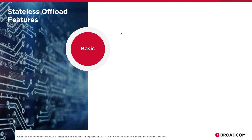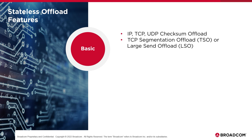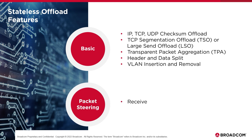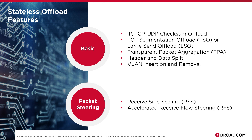RoCE also supports a number of stateless offload features that help improve network performance and reduce CPU cycles needed for network operations. The basic offloads include checksum offload for IP, TCP, and UDP, allowing the NIC to handle checksum calculations; TCP segmentation offload or large send offload to handle data segmentation; transparent packet aggregation to improve efficiency and reduce overhead; and header and data split to improve performance and CPU efficiency. VLAN insertion or removal is also supported to offload the tagging. Packet steering is employed via RSS and RFS to help distribute receive processing more evenly across the available CPU cores.